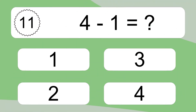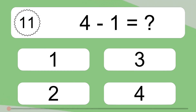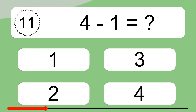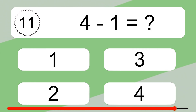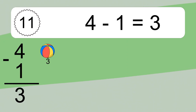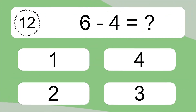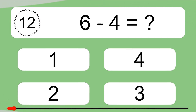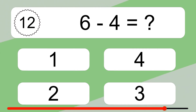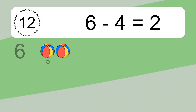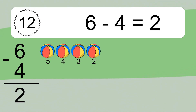4 minus 1 equals what? 4 minus 1 equals 3. Let's count it. 16 minus 4 equals what? 16 minus 4 equals 2. Let's count it. 5, 4, 3, 2.